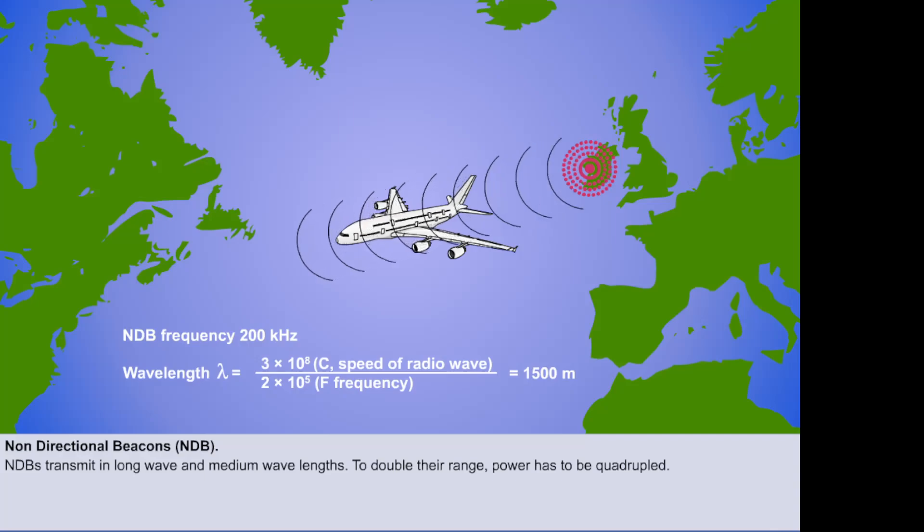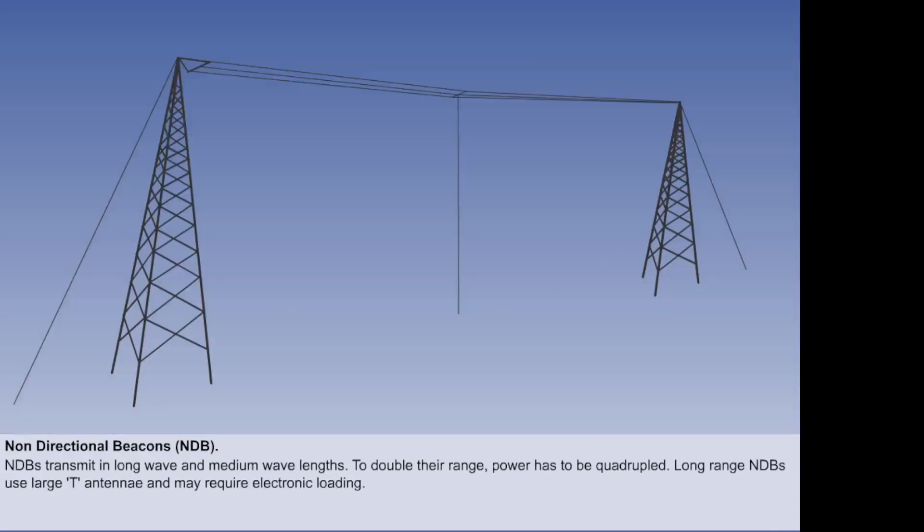Remember that to double the range of a signal, you have to quadruple the power. The antenna used as NDBs for long range transmissions are in the shape of a large T, about 25 meters high and 50 meters long.